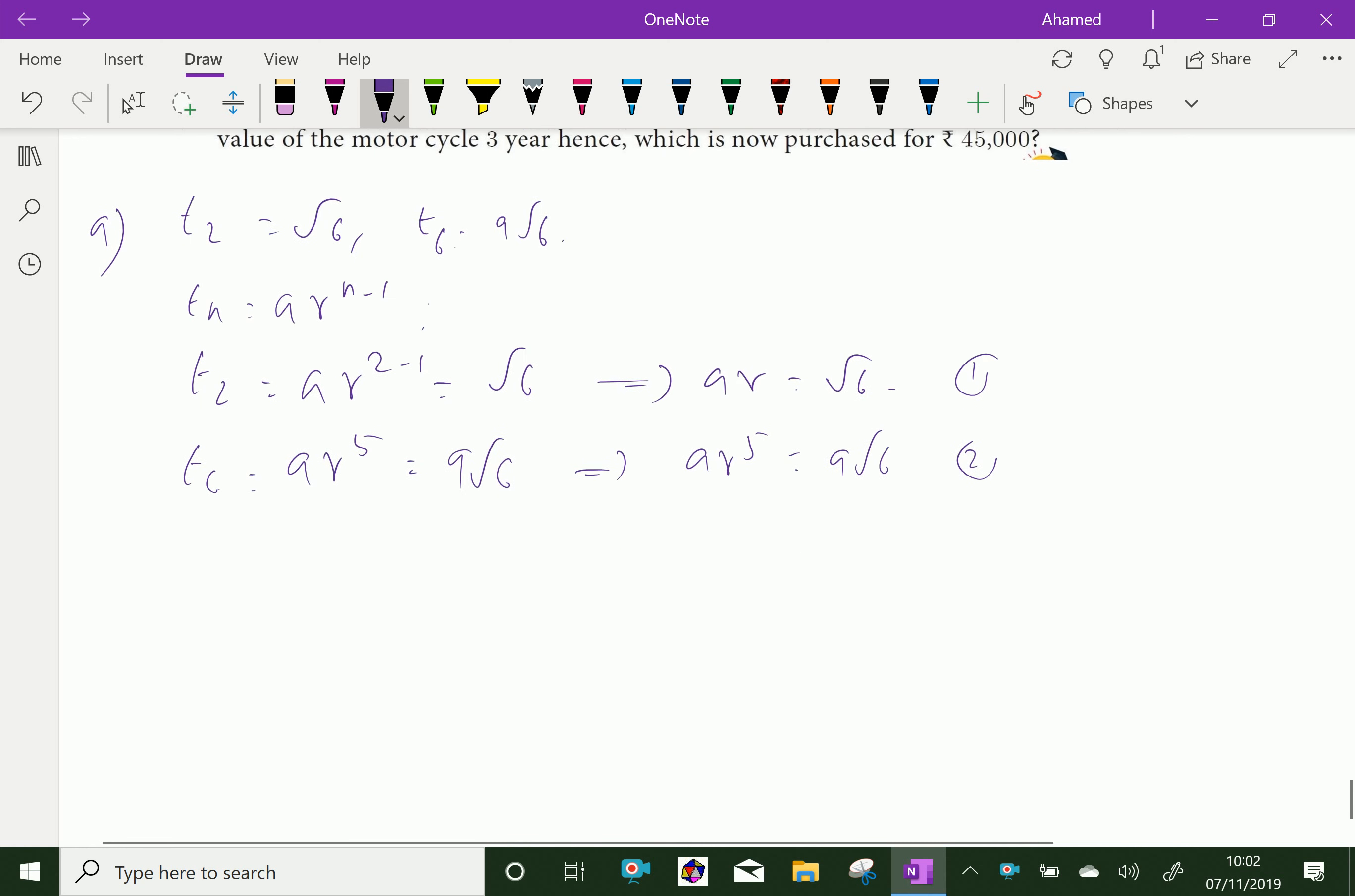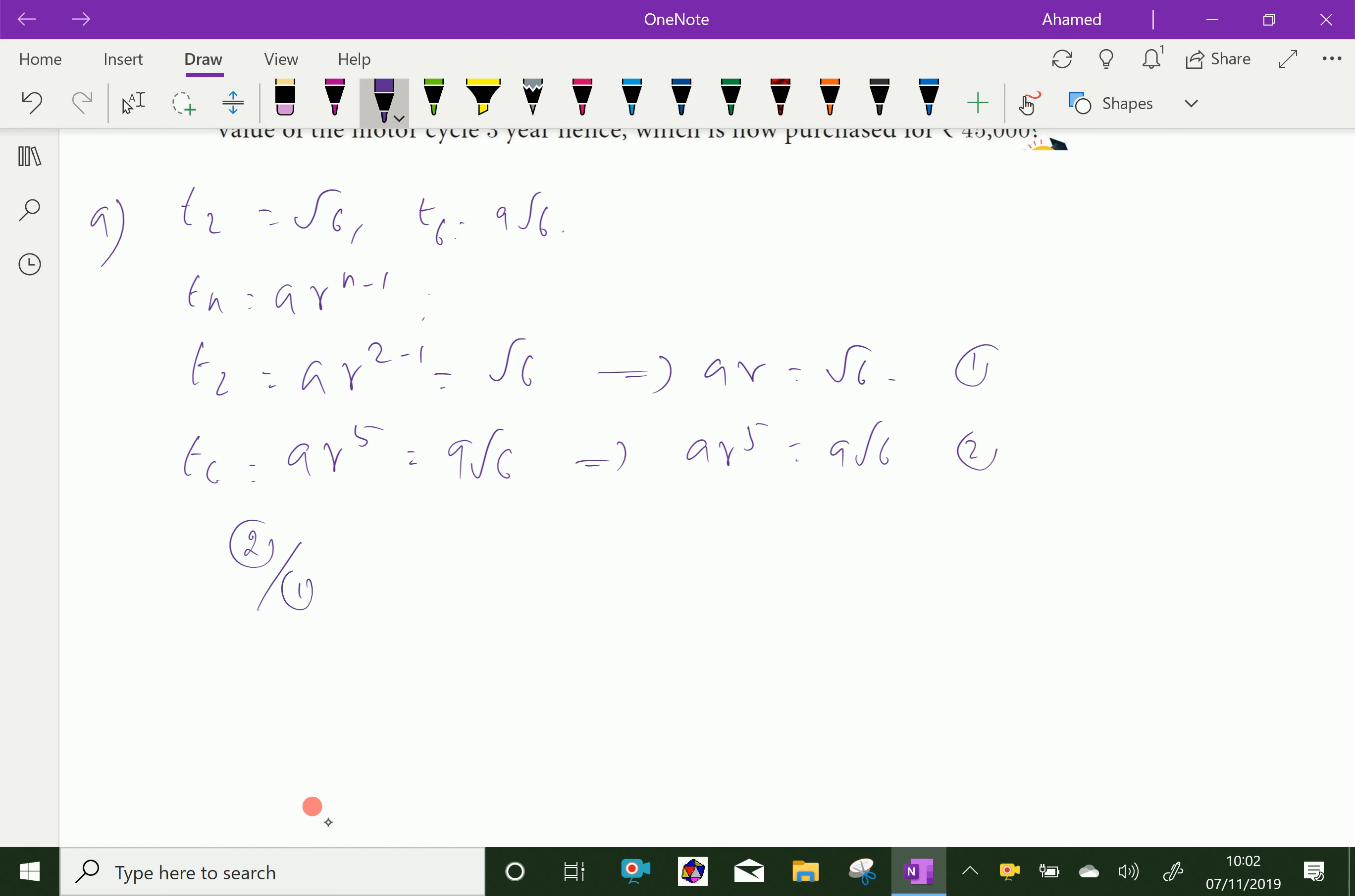Now, 2 divided by 1: ar^5 over ar equals 9√6 over √6. √6 cancels, a cancels. From that r^5 by r is r^4 equals 9.